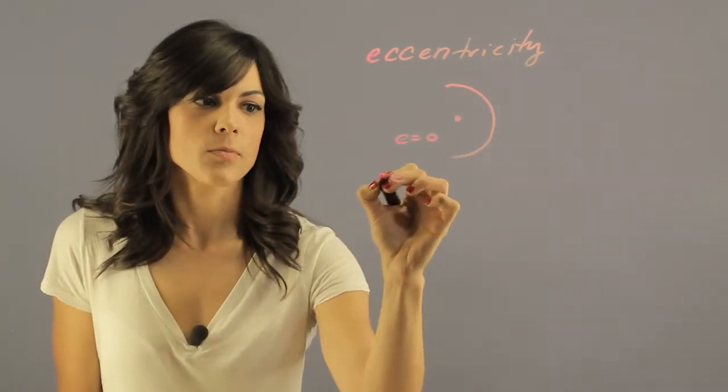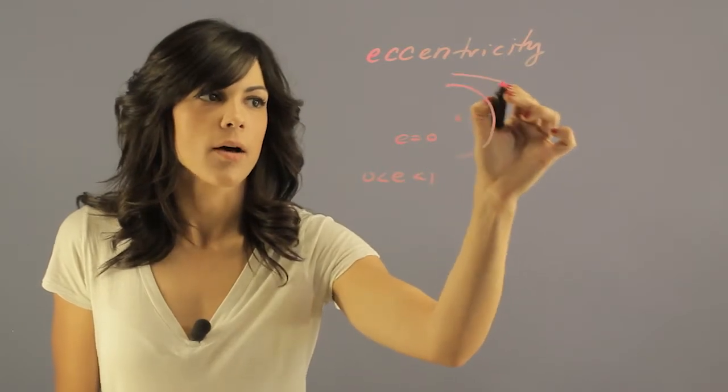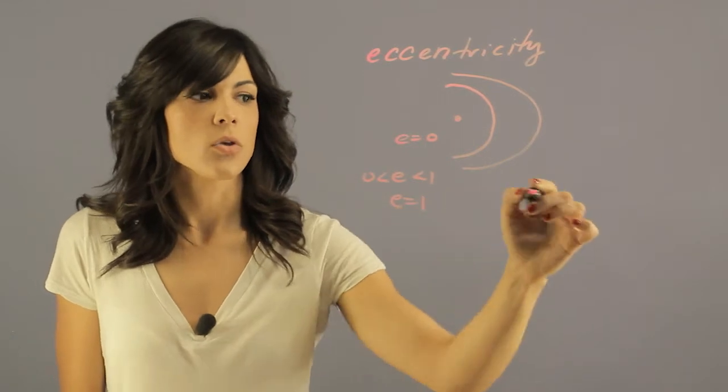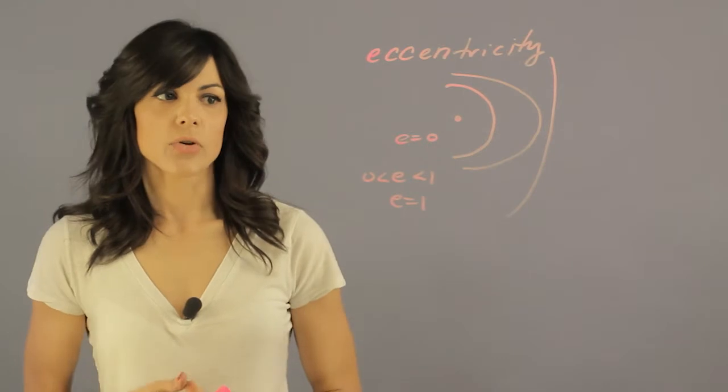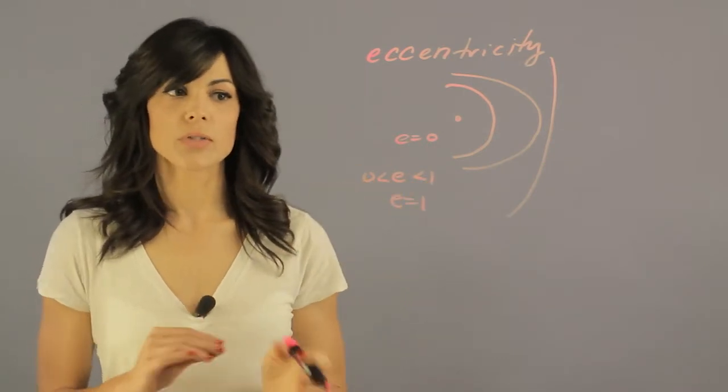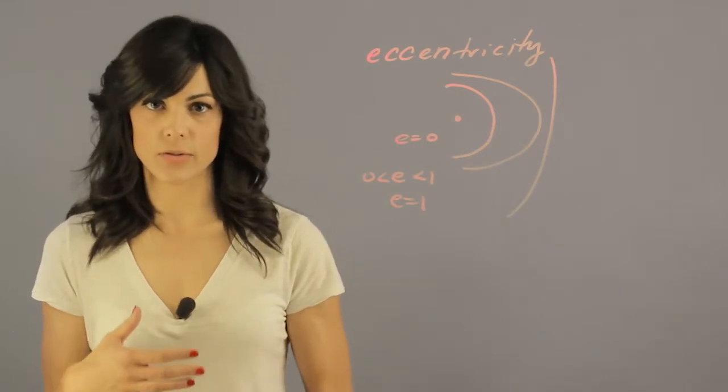If e is between zero and one, you have an elliptical orbit, and if e is equal to one, you have something like a parabolic trajectory. Generally, for most of our planets, it's between zero and one. The closer it is to zero, the more circular it is. I will mention the planets and their eccentricity.